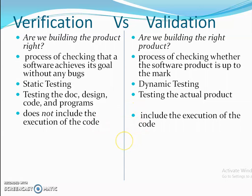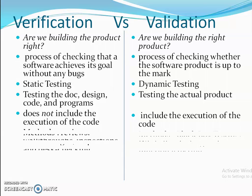But in validation, it's mainly about execution of the code. We check whether we can achieve the final product or not — the right product. That should be done through execution of the code. Code execution is done in the validation area.